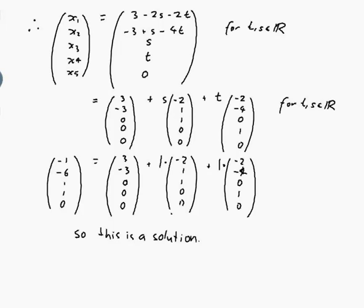Of course, a different way of checking to see whether it was a solution would be to substitute it into the original equations to see if it really worked. So why don't I do that for the other point? So the other point that we're interested in is (3, -3, 0, 1, 0), and let's see if that works. I'll just start a new page.